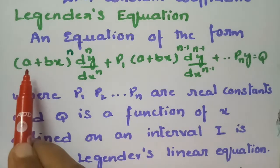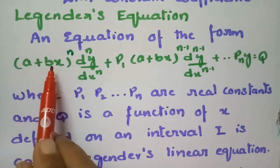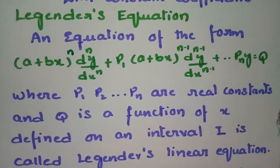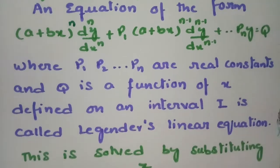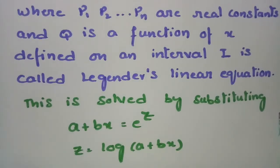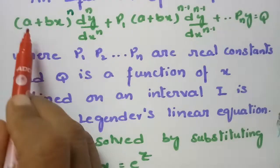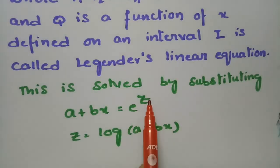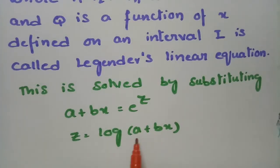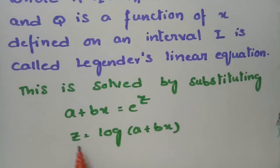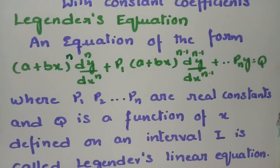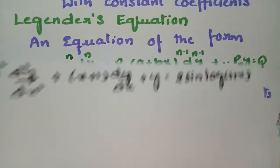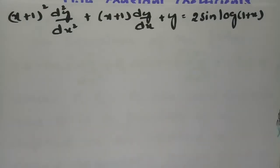It should be of the form (a + bx)^n, and this can be solved by substituting a + bx. In place of (a + bx) we substitute e^z, and log(a + bx) is substituted by z. Using this substitution we have to solve the problem. An example of the Legendre's Equation is as follows.